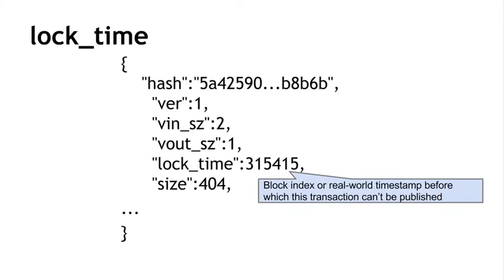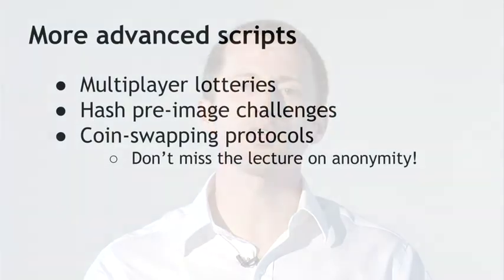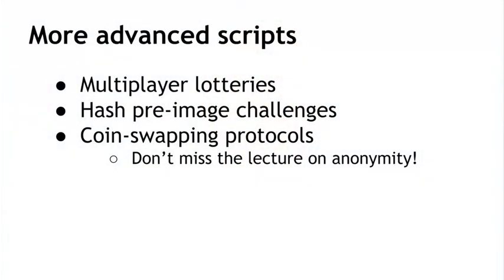Hopefully those examples have shown you that you can do some pretty neat stuff with Bitcoin scripts. Those are just three examples that are the most practical and simple to explain, but there are a lot of other things people have looked into doing. One of them is multiplayer lotteries — a very complicated multi-step protocol with many transactions, different lock times, and escrows in case people cheat — but you can actually run a fair multi-party lottery over Bitcoin using just the scripting language. There are also ways to pay someone if they know the pre-image of a hash, and protocols for different people to mix their coins together so it's harder to trace who owns which coin.